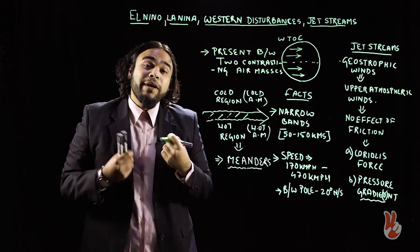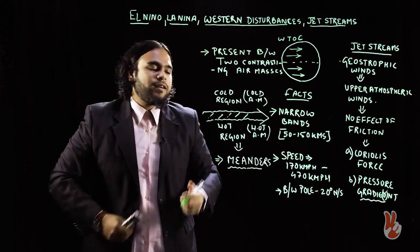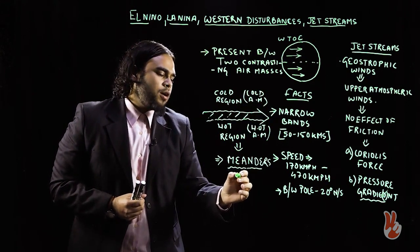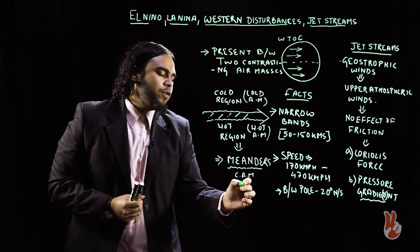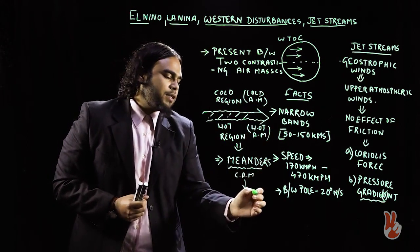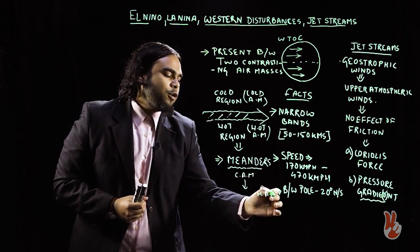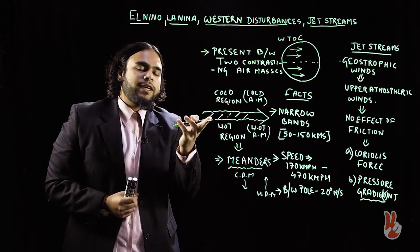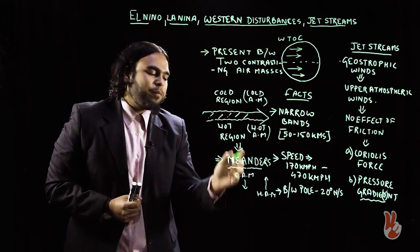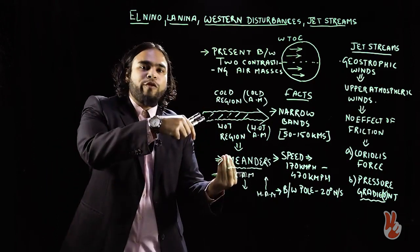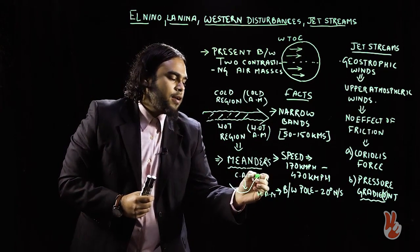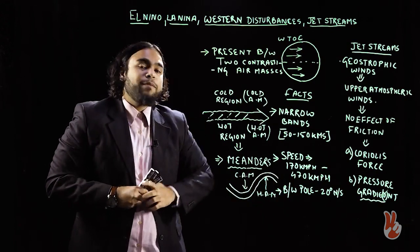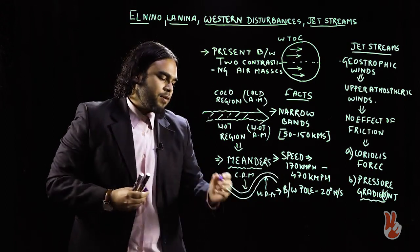Jet streams meander because the cold air mass tends to move into the region of the hot air mass and vice versa. Instead of moving in a straight path, as these air masses push into each other's regions, the flow of the jet stream takes on a meandering structure.